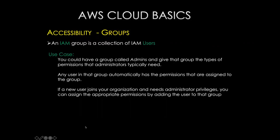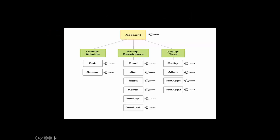An IAM group is a collection of IAM users. A typical use case: create a group called 'admins' and assign that group the types of permissions that administrators typically need. Any user in that group automatically has the permissions assigned to that group — the same concept used in Windows NT or Windows Server. You can create different groups: admin groups, users-only groups, developers with limited access, and test users — bifurcated based on your needs.